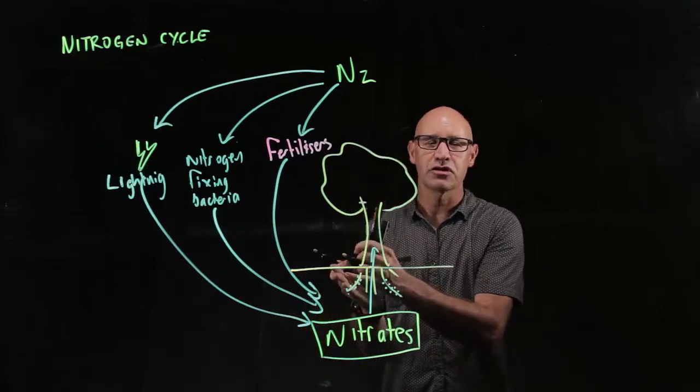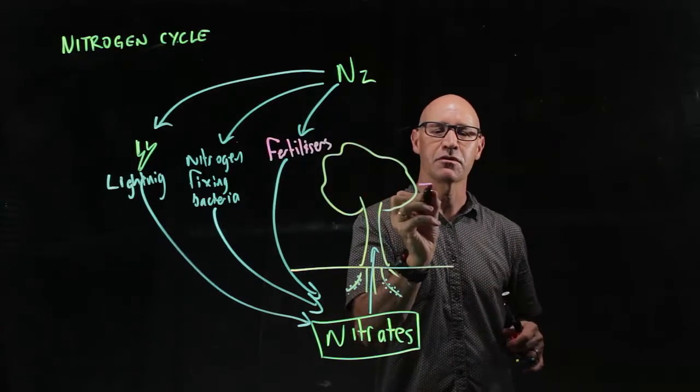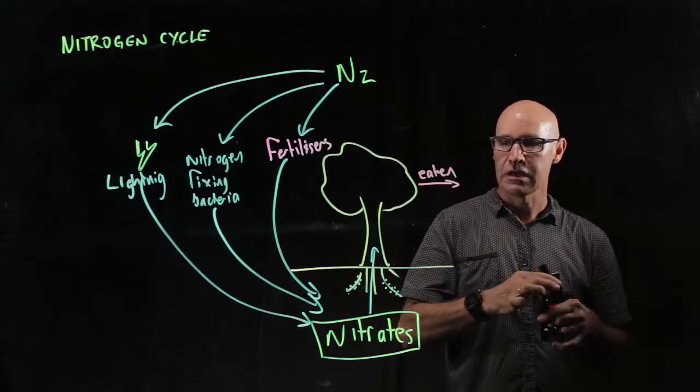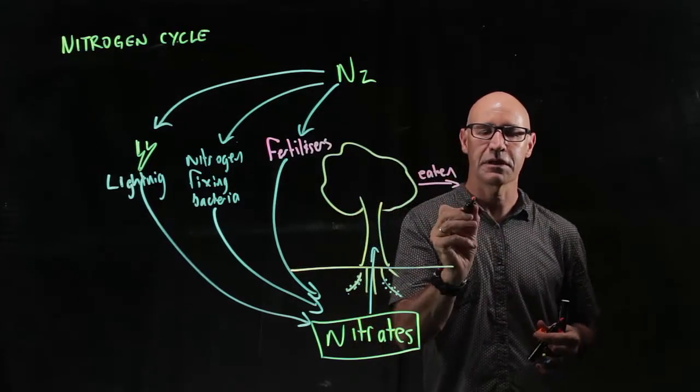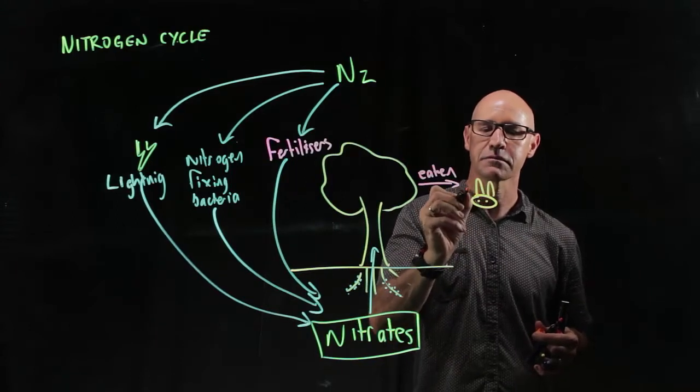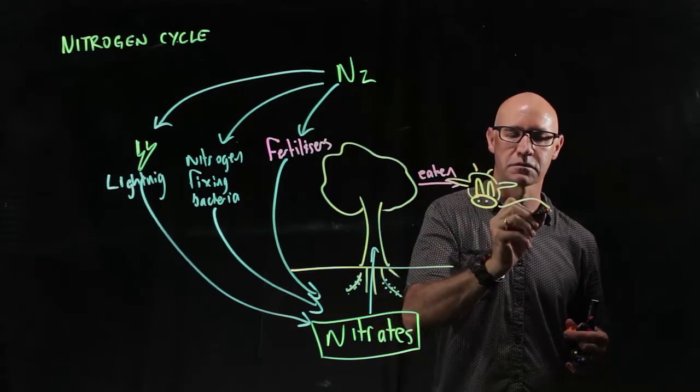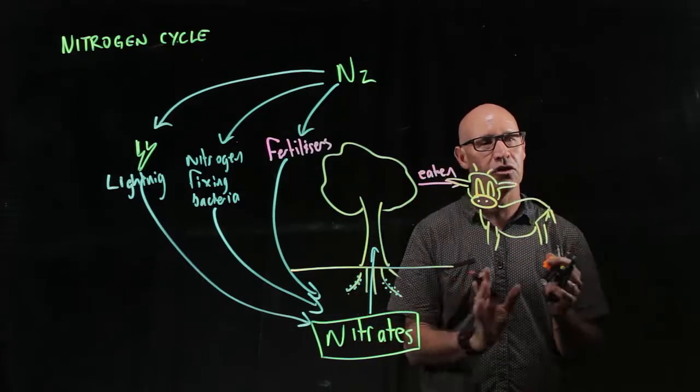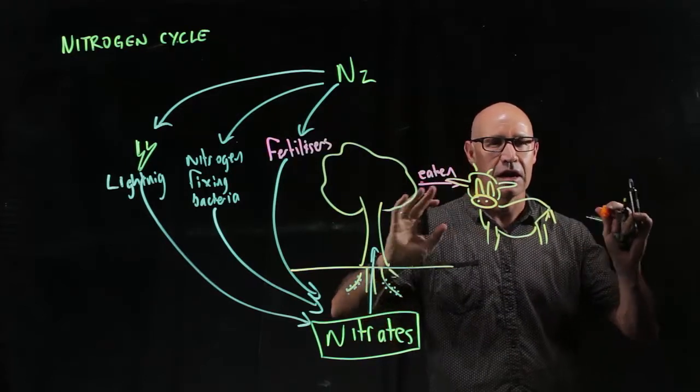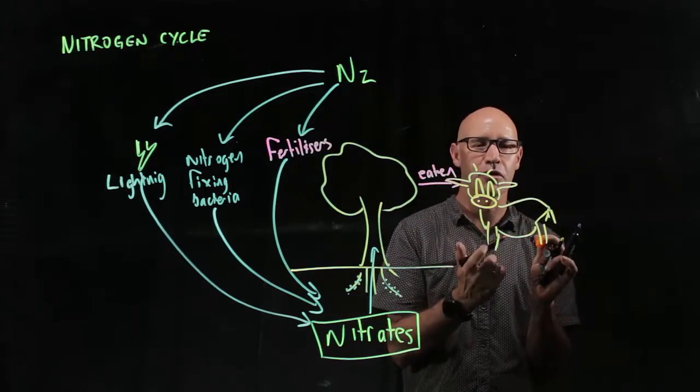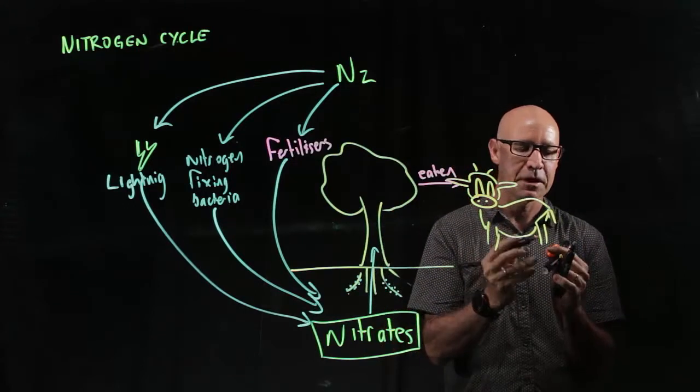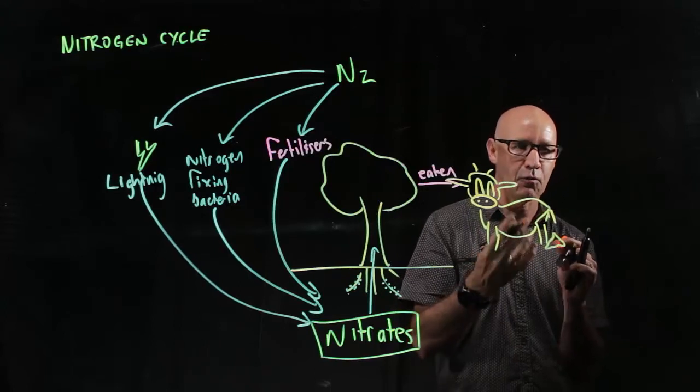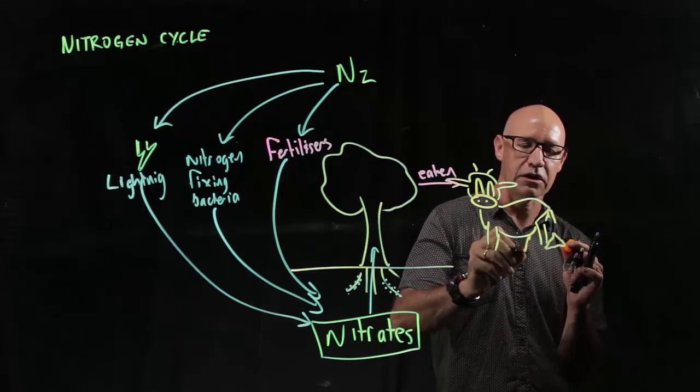So then the nitrates pass on up the ecosystem just through the plants being eaten. So we have animals that eat plants like our cow. The cow that eats the plants and then obviously has nitrogen in its proteins and its muscles and its bones, etc. But these animals are also producing nitrogen rich waste, so like wee and poo.